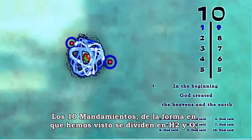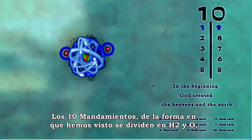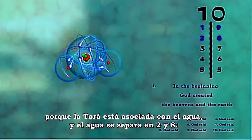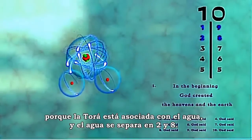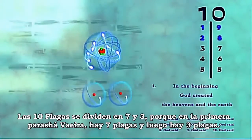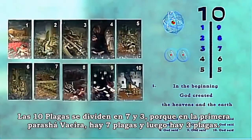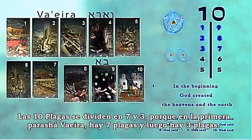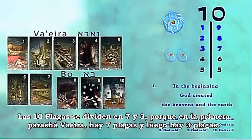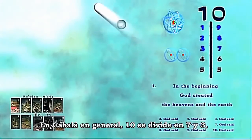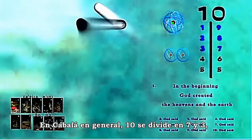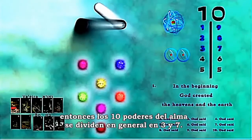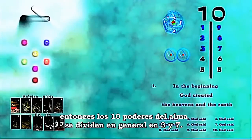The ten commandments, in the way that we just saw, split into H2 versus O — because the Torah is likened to water — and water splits into two and eight. The ten plagues split into seven and three, because in the first parashah of Va'era there are seven plagues, and then there are three plagues. In Kabbalah in general, ten splits into seven and three, because seven are the emotions of the heart and three are the intellectual faculties. So the ten powers of the soul in general split into three and seven.